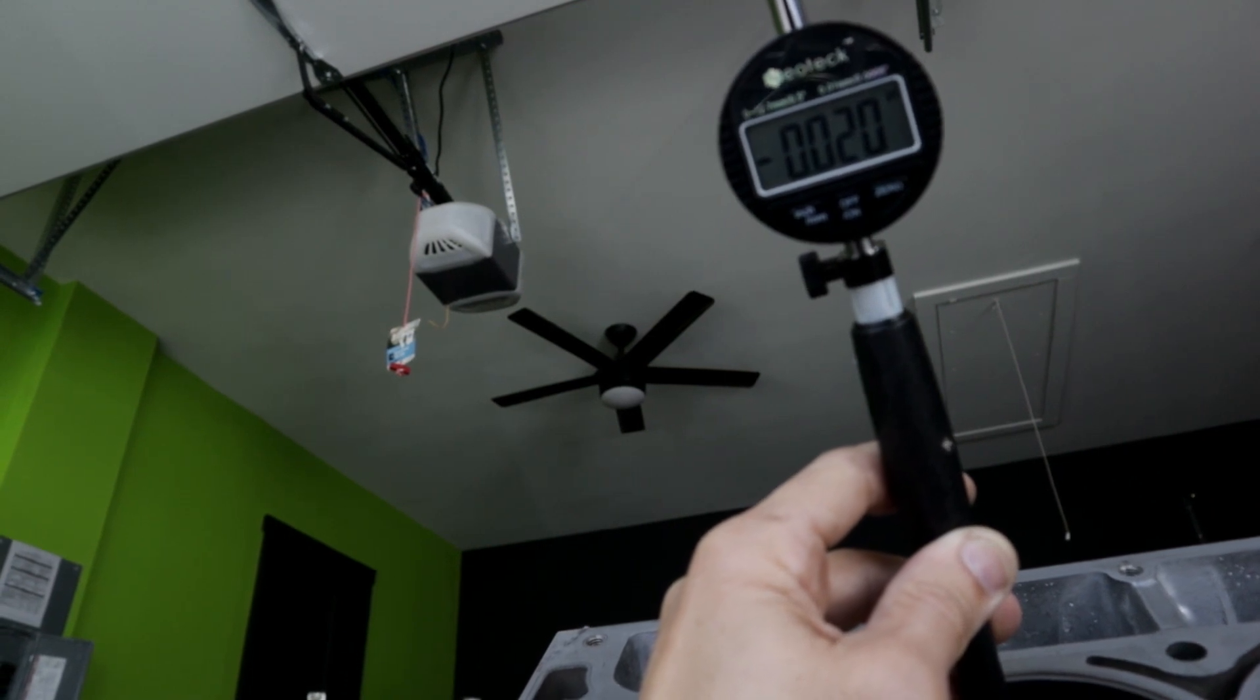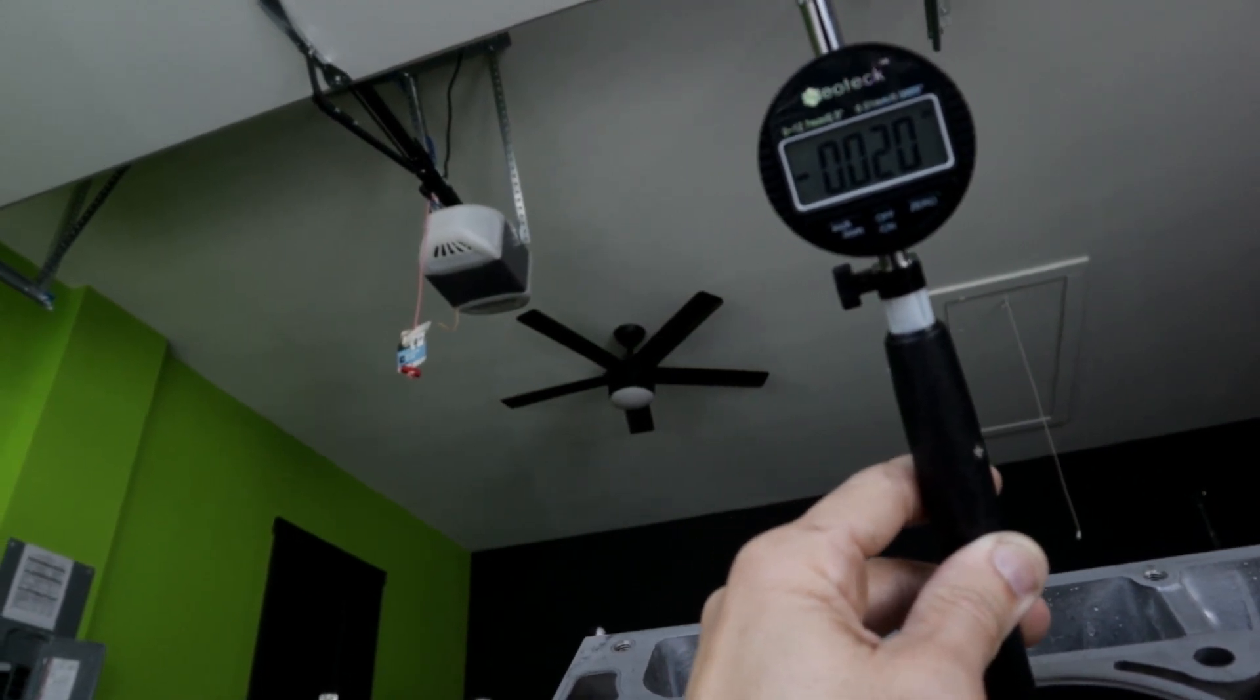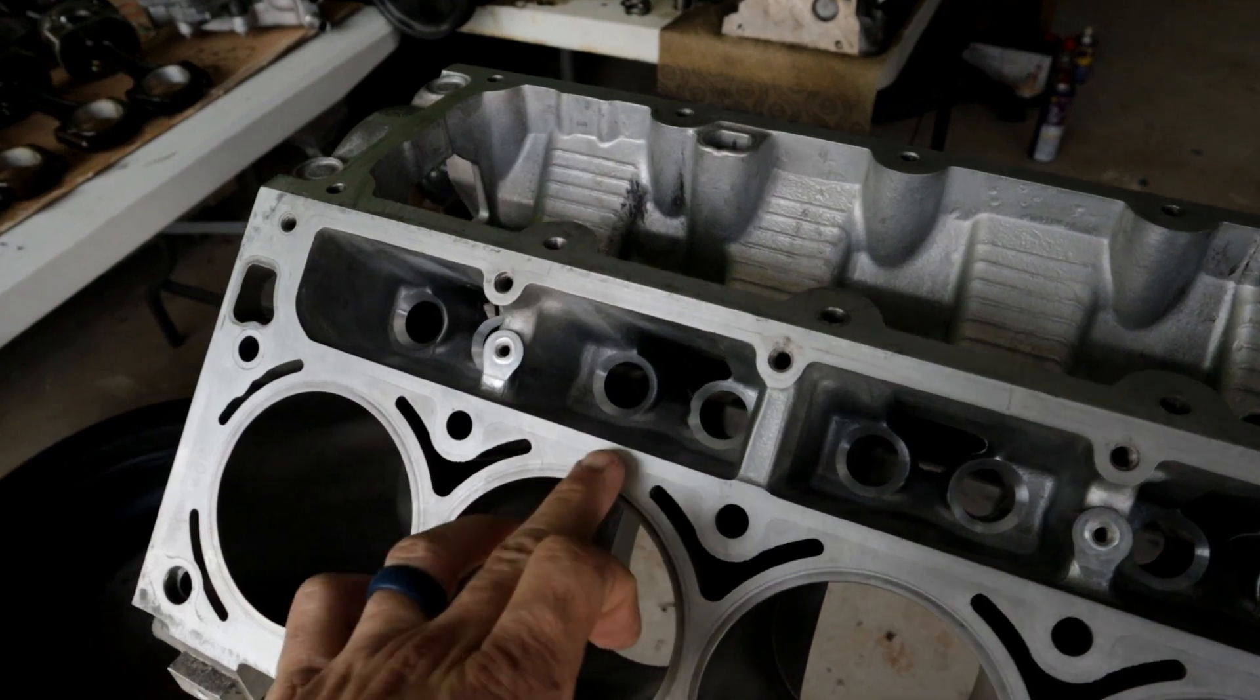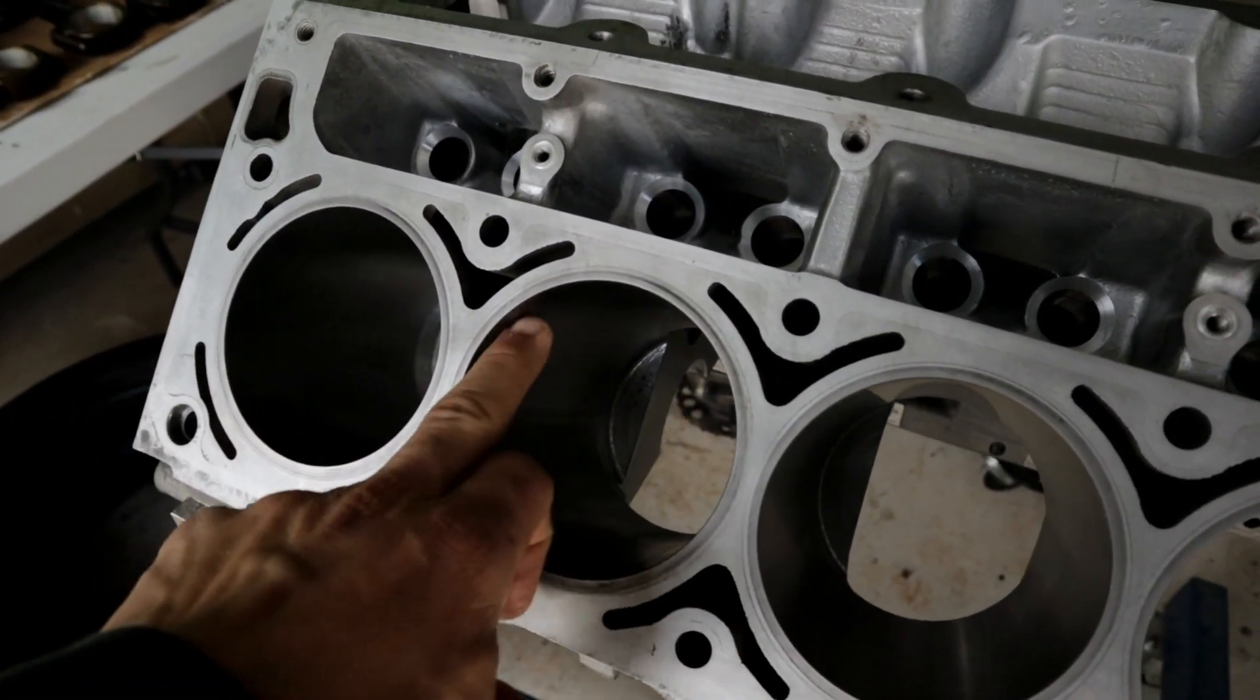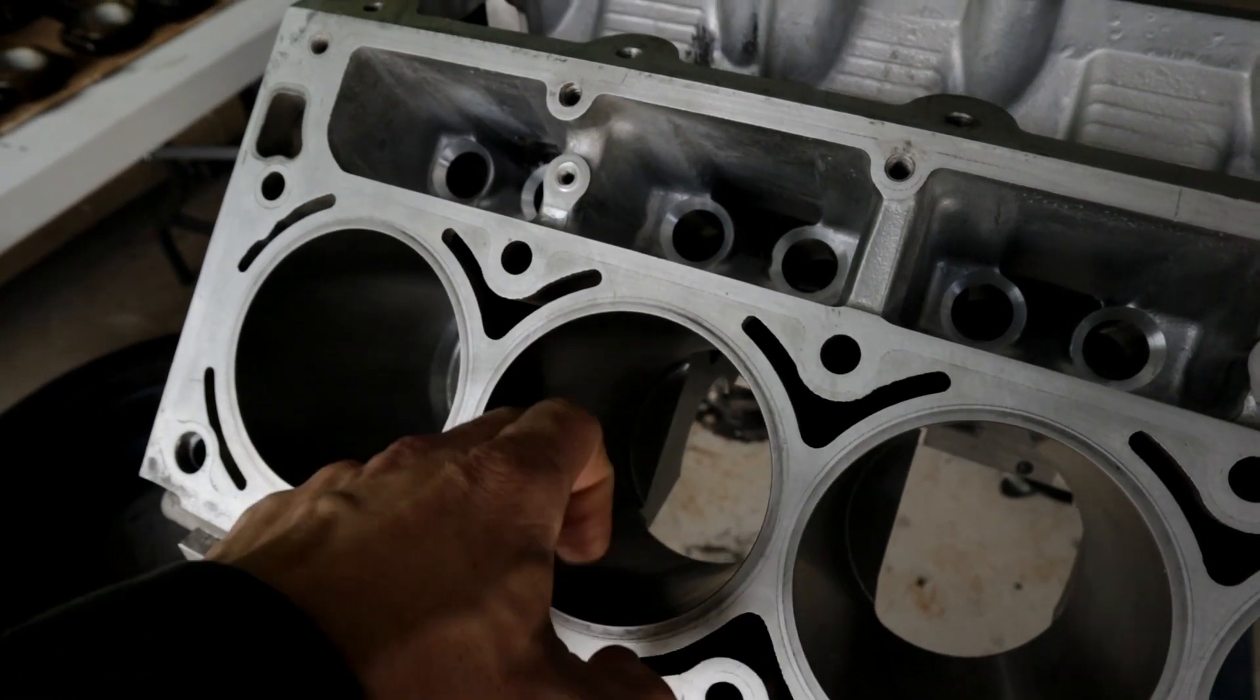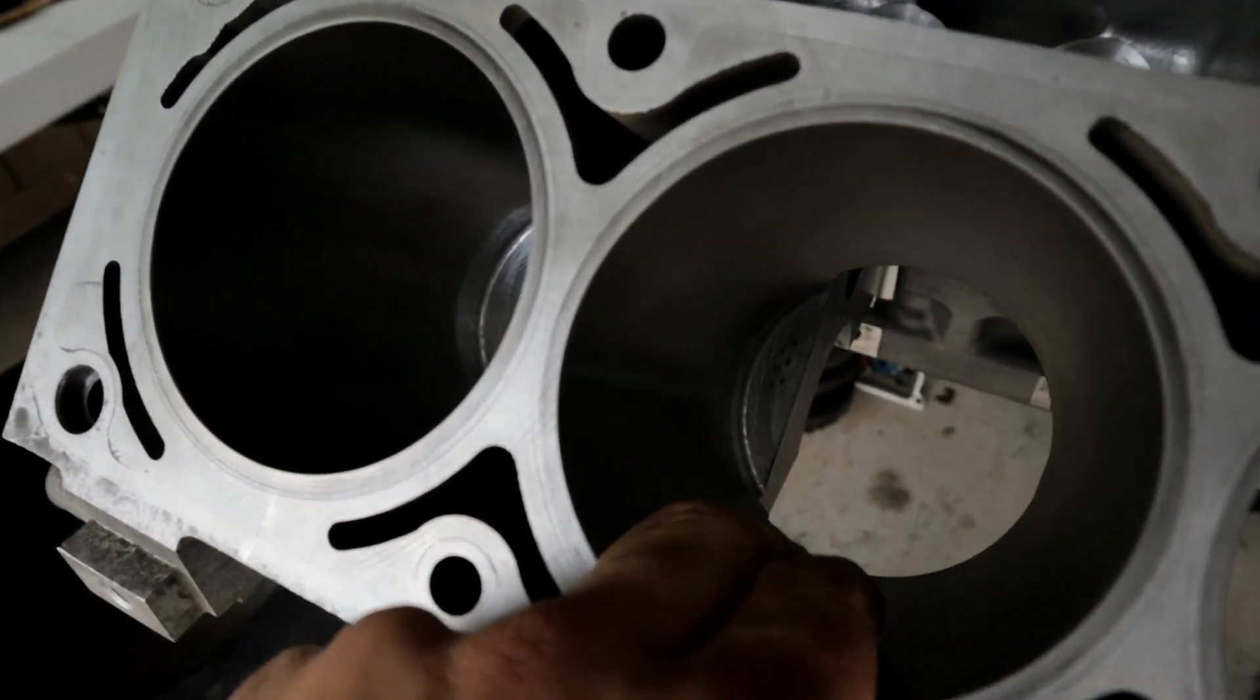For cylinders, you want to measure up and down and side to side. You want to measure the top, the middle, and you want to measure the bottom of it.